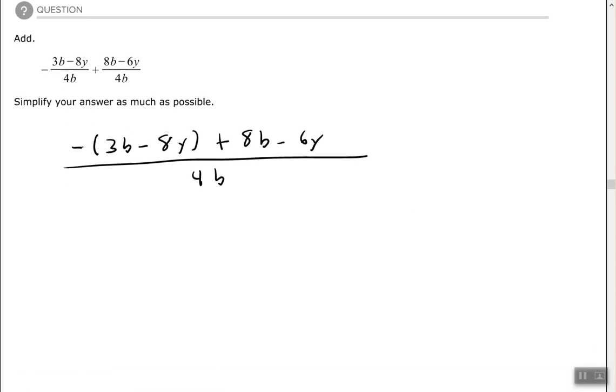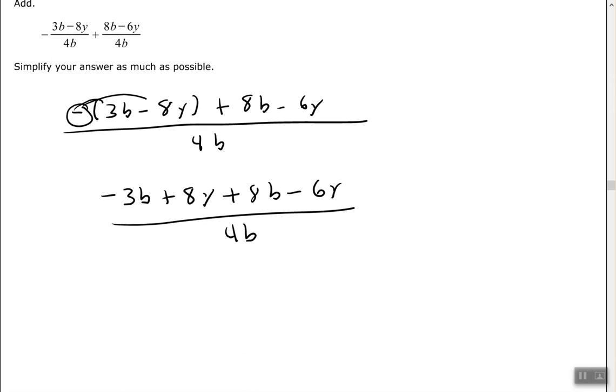Let's clear the parentheses. We have negative 3b plus 8y plus 8b minus 6y, all over 4b.